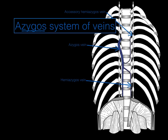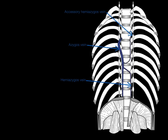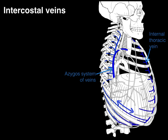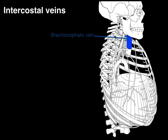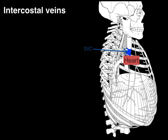The azygous system of veins all drain blood back to the heart. The azygous vein takes from every right intercostal space, drains blood, and goes to the superior vena cava. The accessory hemiazygous vein drains the upper left intercostal spaces, and the hemiazygous vein drains the lower left intercostal spaces. Both the accessory and hemiazygous veins drain into the azygous, and that blood all goes back to the superior vena cava. The internal thoracic vein courses vertically like suspenders on either side of the internal surface of the sternum, dumps into the brachiocephalic vein, which drains into the superior vena cava, and then into the heart.